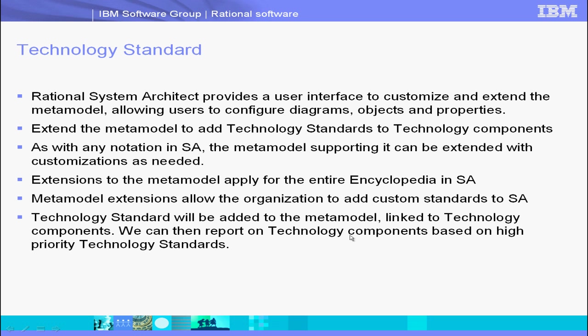The extensions to the Meta Model apply to the entire Encyclopedia within System Architect, so any changes you make will be reflected across the entire Encyclopedia moving forward. Meta Model extensions allow the organization to add their own custom standards to System Architect, so organizations can have their own custom standards extended in the System Architect repository and be on the same standard notation. Technology Standards will be added to the Meta Model, linked to Technology Components. We can then report on Technology Components based on High Priority Technology Standards, for example.